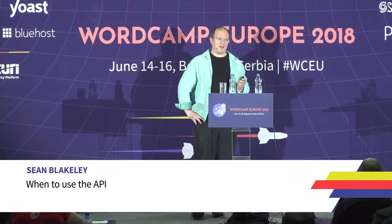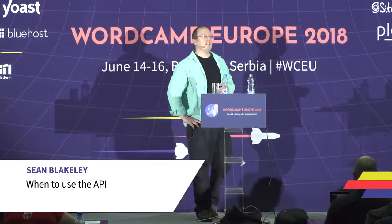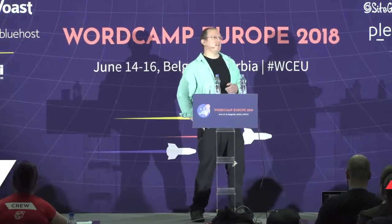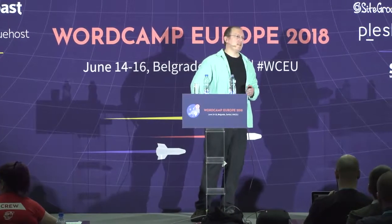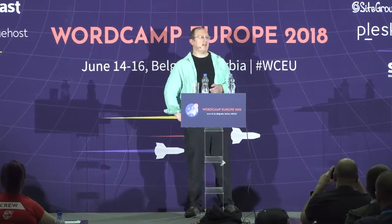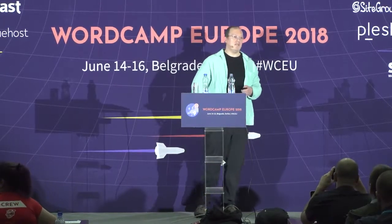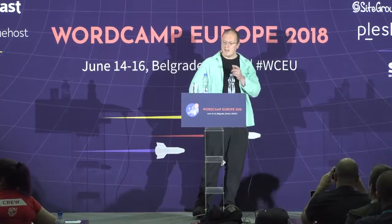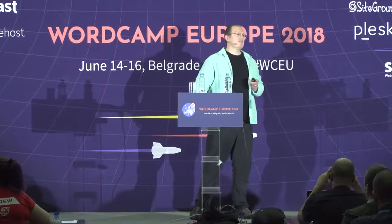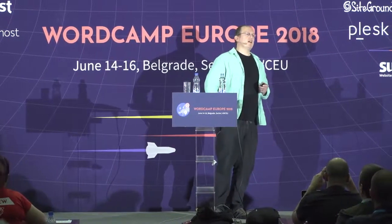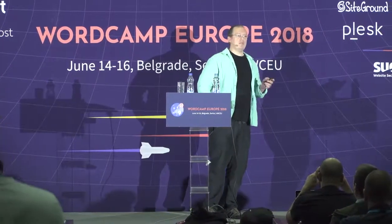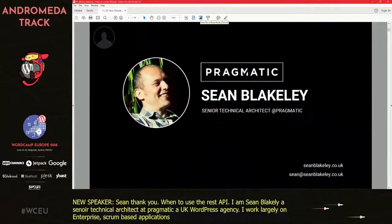So as Monique just said, my name's Sean Blakely. I'm a senior technical architect at Pragmatic, which is a UK WordPress agency. I work largely on enterprise, Scrum-based products, and I've been working with WordPress for about a dozen years or so.